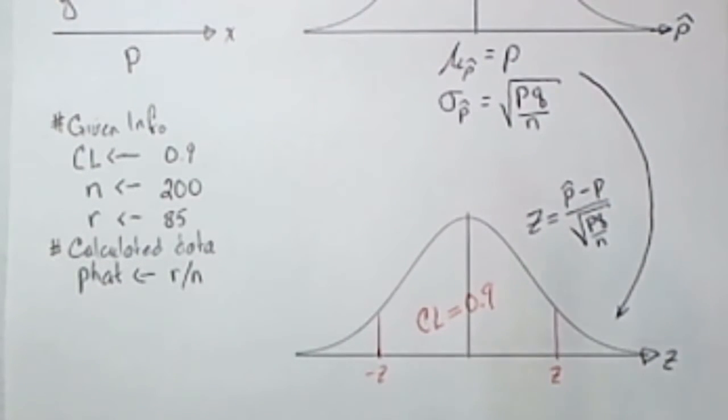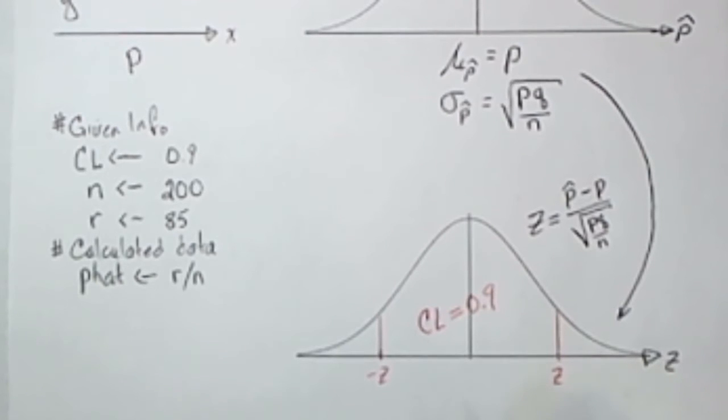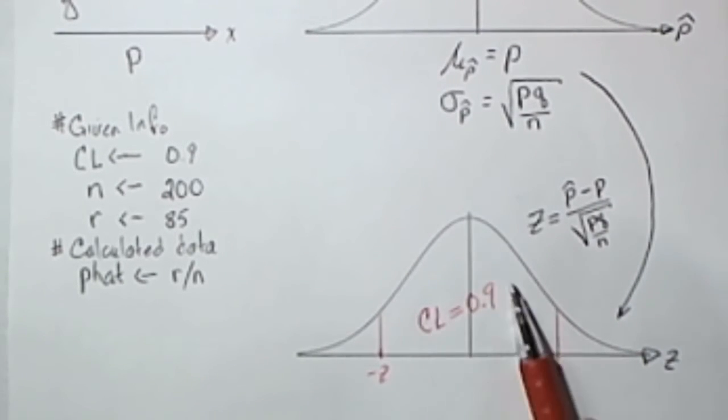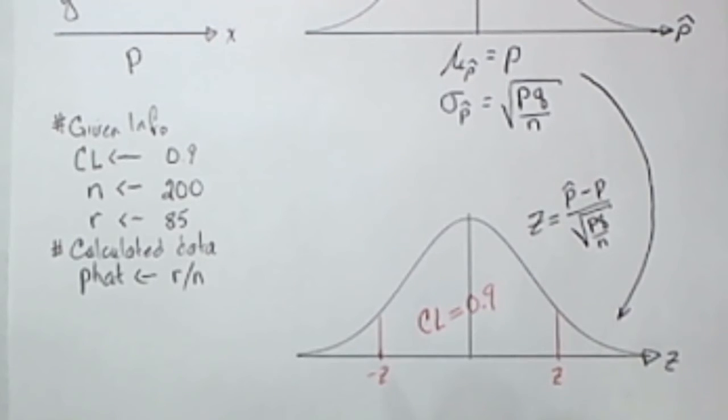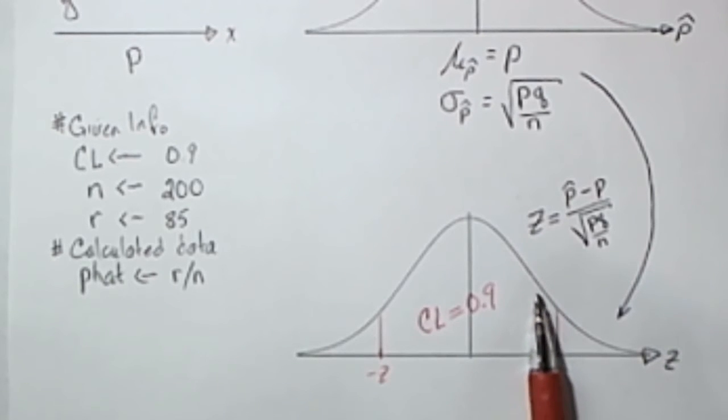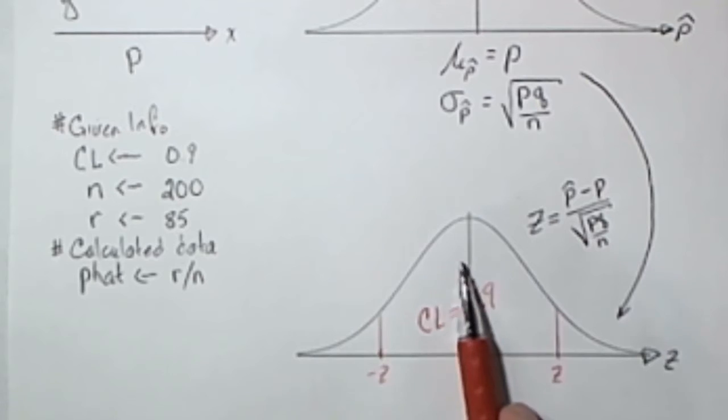We learn how to do that kind of a problem in chapter 6. The idea is that we know a probability and we're trying to find a quantile so we'll use a Q norm. What we need to know then is what the probability is below the particular Z value that we're looking for.